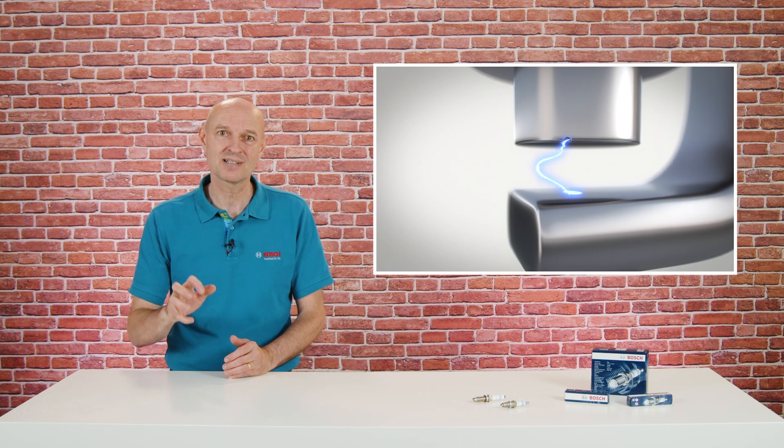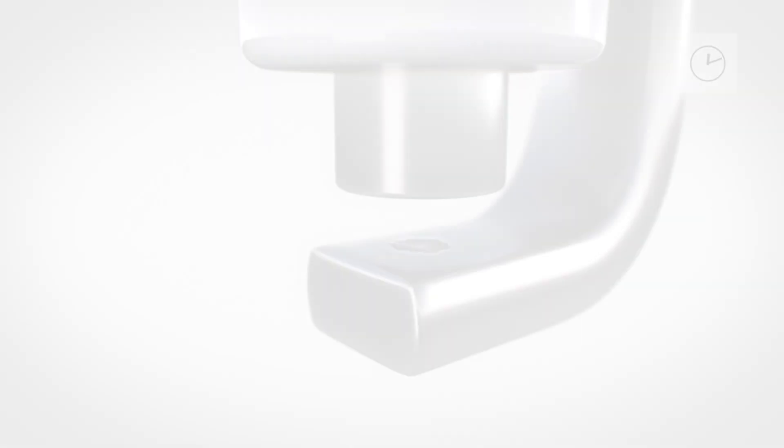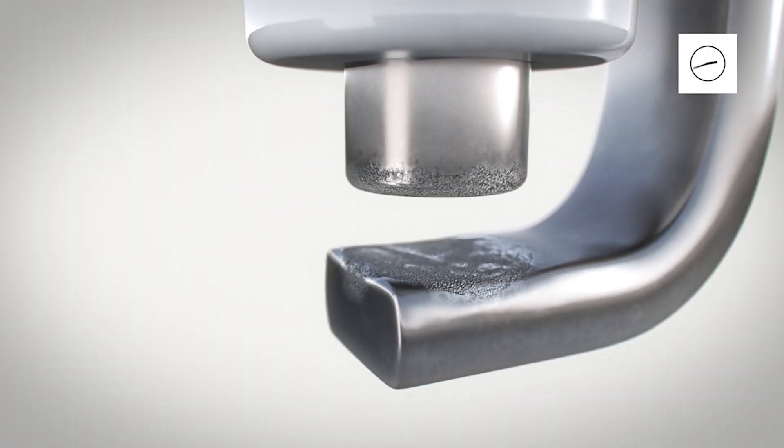During this process, the plasma tears out tiny amounts of electrode material. Very small craters are formed on the surface of the electrodes, which causes them to wear out.